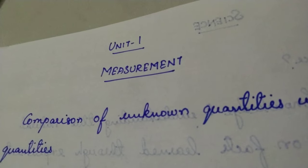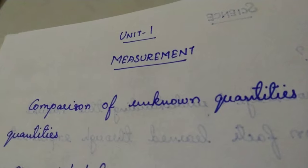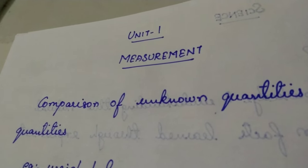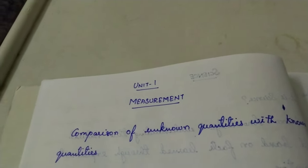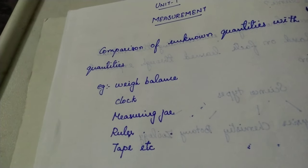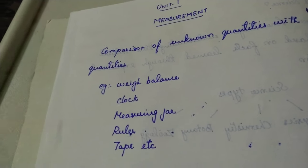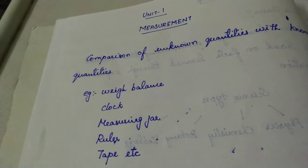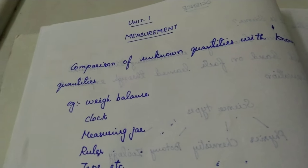Likewise, we measure temperature through a thermometer — this is all measurement, the comparison of unknown quantity with the known quantity. Some examples of measuring instruments are weight balance, clock, measuring jar, ruler, tape, etc. In every day of our life we use measurement. Think of some other examples and you will get to know that measurement is used everywhere in our daily life.